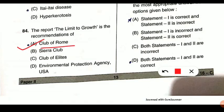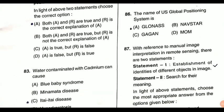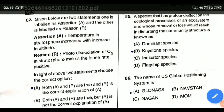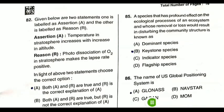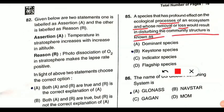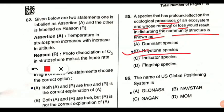Question 85: a species that has a profound effect on the ecological process of an ecosystem, and whose removal or loss would result in disturbing the whole community structure, is known as what. A species with an important effect on the ecological process of an ecosystem — if you remove it, it destroys the community structure. This is talking about the keystone species. Option B is correct.